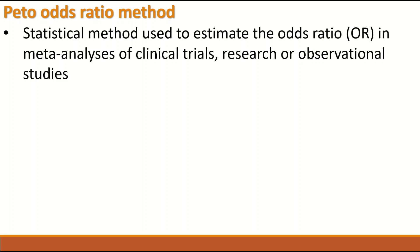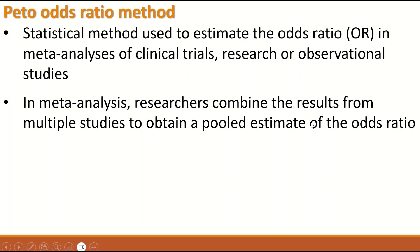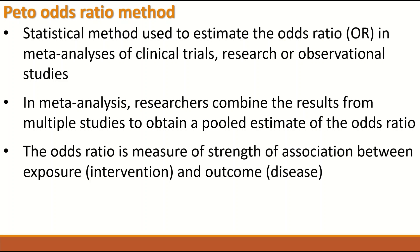The Peto odds ratio method is used to determine the odds ratio in meta-analysis of clinical trials, research, or observational studies. In meta-analysis, researchers combine the results from multiple studies to obtain a pooled estimate of the odds ratio. The odds ratio is the measure of the strength of association between exposure and an outcome. An exposure can be intervention, drug administration, treatment, or risk factors, and the outcome can be a disease.